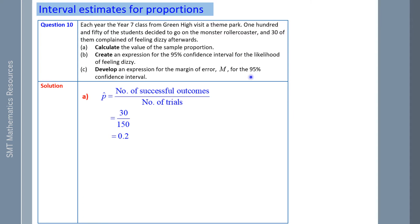Create an expression for the 95% confidence interval for the likelihood of feeling dizzy. So the 95% confidence interval is your sample proportion of successes, which is P hat, plus or minus 1.96, which is 95%, times the standard deviation. We're now subbing in our 0.2. One take 0.2 is 0.8, and we have 150 sampled. So it's 0.2 plus or minus 0.064, which is our margin of error.